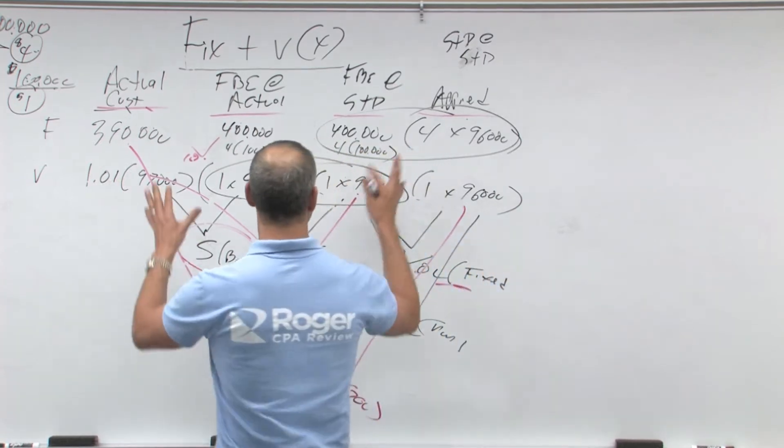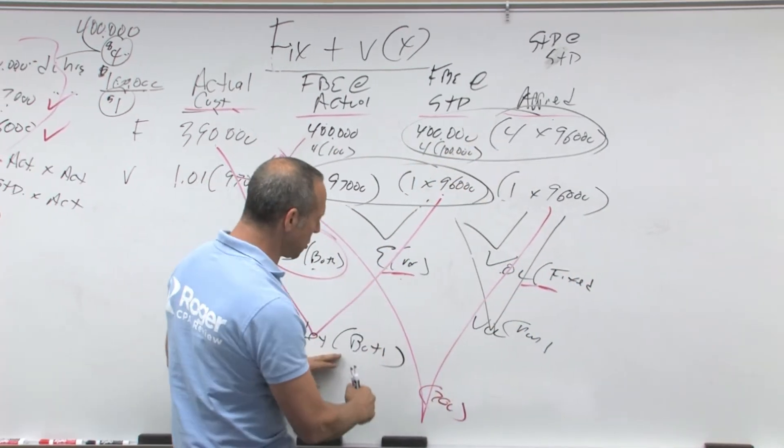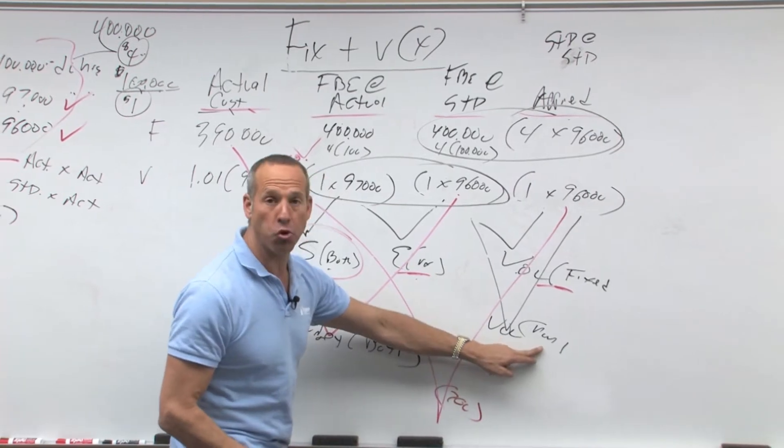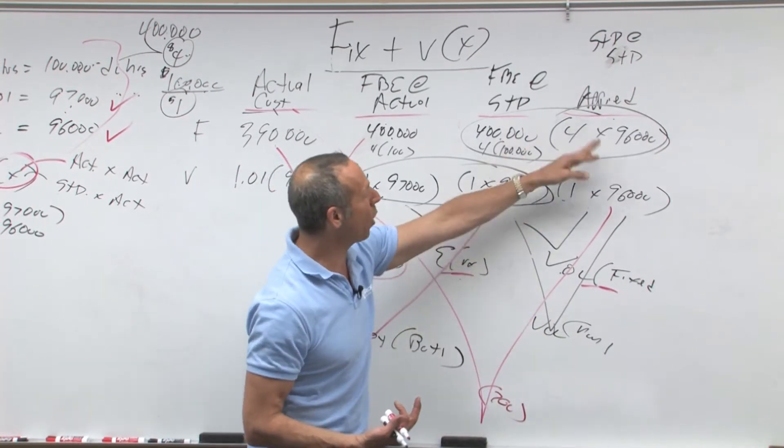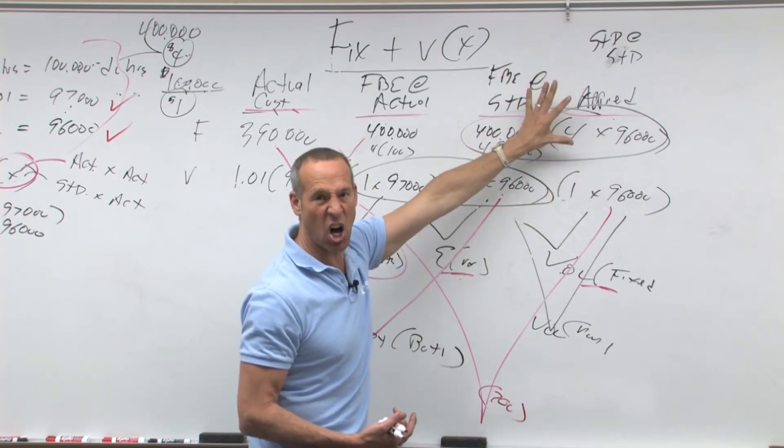So we've got the budget volume - volume is non-controllable. This one's hard to control because it has to do with how we're applying or not applying our fixed costs.